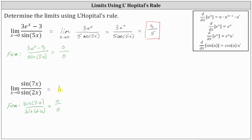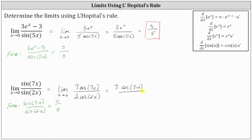The given limit is equal to the limit as x approaches zero of the derivative of sine seven x divided by the derivative of sine two x. The derivative of sine seven x is cosine seven x times seven, or seven cosine seven x. The derivative of sine two x is cosine two x times two, or two cosine two x. Since cosine is defined at x equals zero, direct substitution gives us seven cosine zero divided by two cosine zero. Cosine zero equals one in both the numerator and denominator, so this simplifies to seven halves.